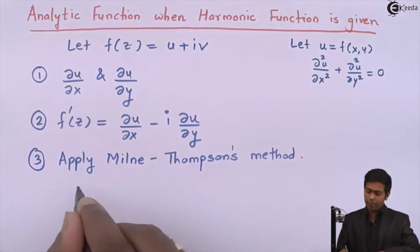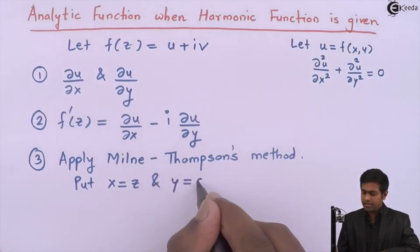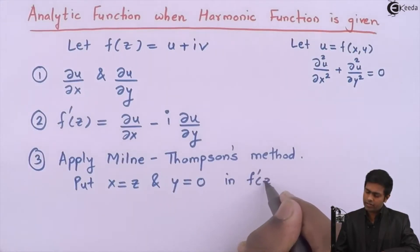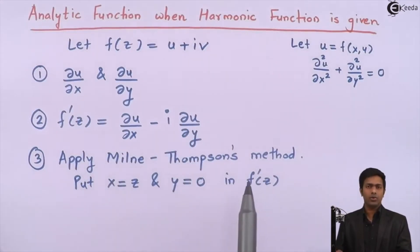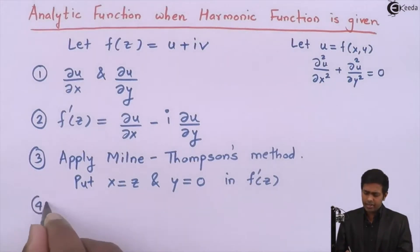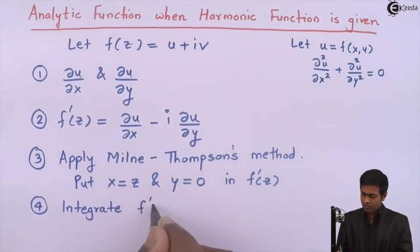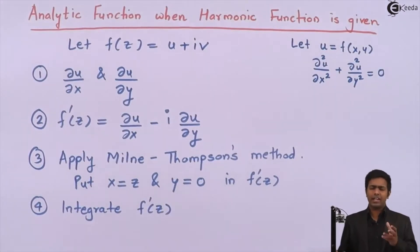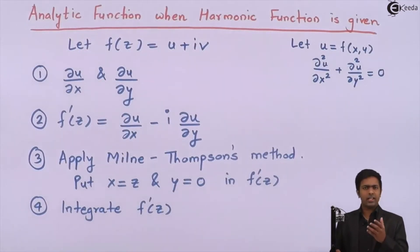In Milne-Thomson's method, we substitute x = z and y = 0 in the expression for f'(z). This converts the whole function into terms of z. Then the last step is to integrate f'(z) with respect to z to get f(z), which is our required analytic function. This is the complete process to find the analytic function when a harmonic function is given.